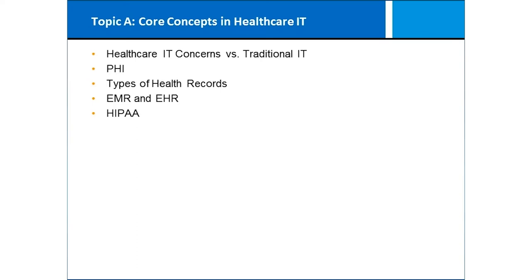We're going to talk about IT concerns in healthcare versus traditional IT and how they might be different, particularly in terms of privacy and portability. We will talk about PHI, personal health information, then different types of health records, electronic medical records versus electronic health records, and the overriding principles of HIPAA.